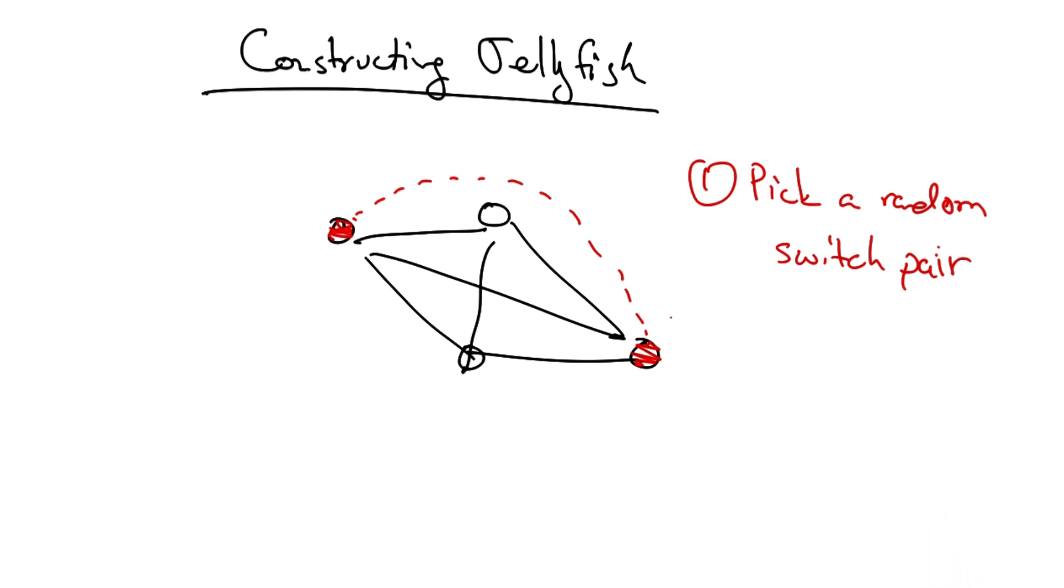If a switch remains with greater than or equal to two free ports, which might happen during incremental expansion by adding a new switch, these switches can be incorporated into the topology by removing a uniform random existing link and adding links to that switch.